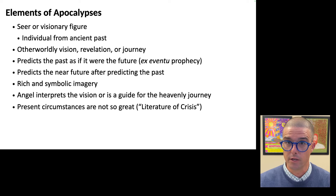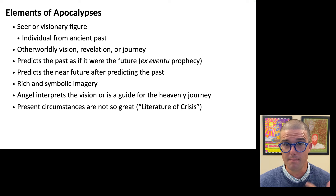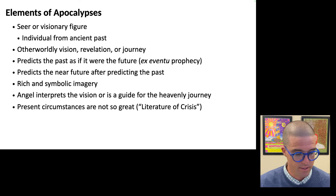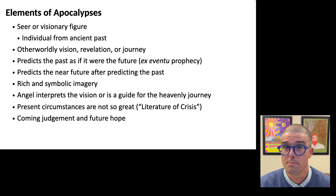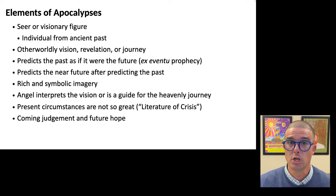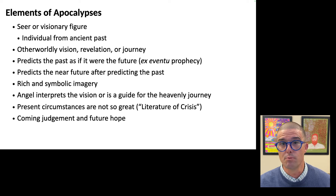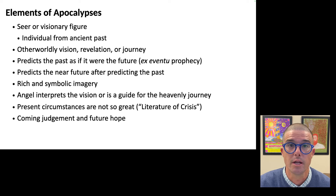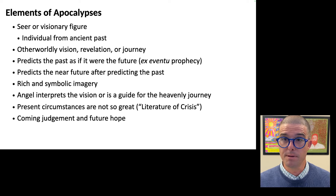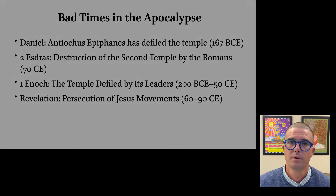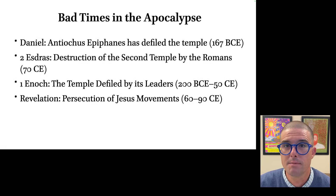It's one thing for a dominant group to claim that violence is coming to the people. It's another thing for an oppressed group to claim that violence is coming upon their oppressors. Apocalypses usually promise that there will be judgment and vengeance, and this judgment and vengeance is meant to lead to future hope. The present evil reign will end, and God will soon put things to right. All will be made as it should be — and for the writers of the apocalypse, all is as it should be when their group has peace and when their group is in power. Apocalypses are written in times of crisis, and they promise future hope.